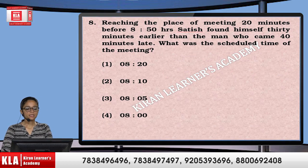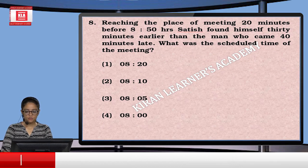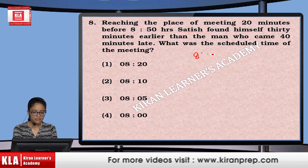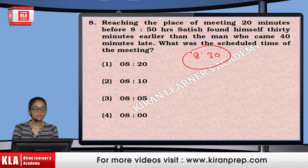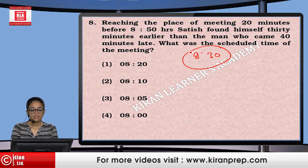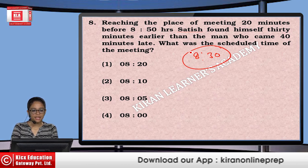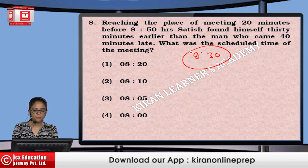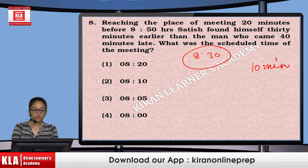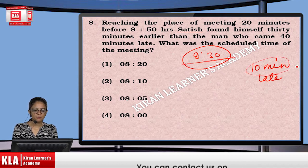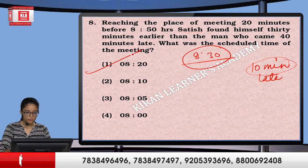Next: Reaching the place of meeting 20 minutes before 8:50, that means at 8:30. Satish found himself 30 minutes earlier than the man who came 40 minutes late. That means the person coming 40 minutes late — Satish came 30 minutes earlier than him, so Satish is 10 minutes late. At 8:30 he noticed he is 10 minutes late, so the scheduled time is 8:20.